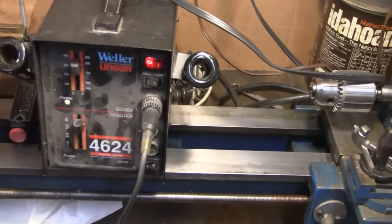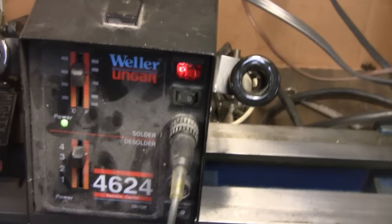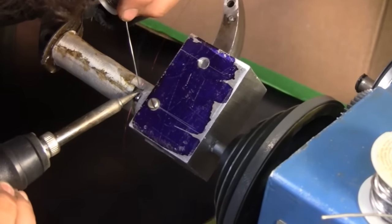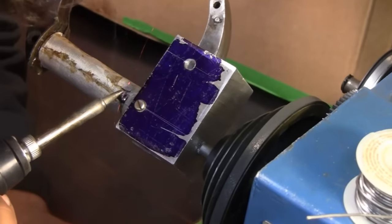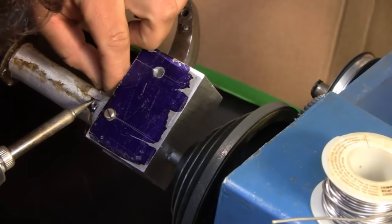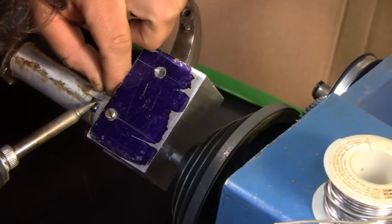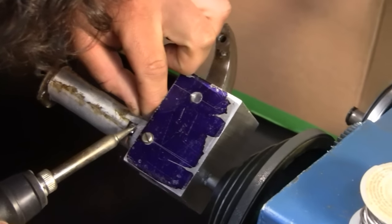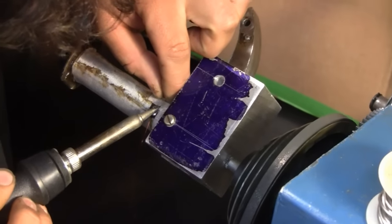You probably can't buy these anymore, can you? Not that one. I don't even think Unger's around anymore. It's Weller, though. Weller Unger. Never heard of it. It has it specially built. This wire's a little bit difficult to solder, just cause of its size. Alright, I'll let you do that, and we'll get back to you.